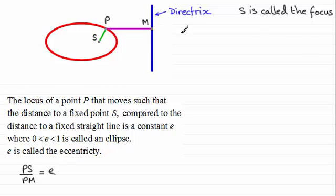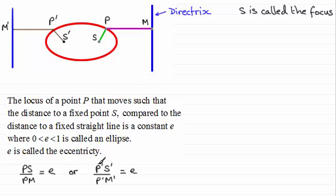Now it's also possible to trace out the same ellipse if the focus and the directrix are placed in this position here where it's symmetrical about a vertical line through the center. In which case we've got the ratio that P dash S dash compared with P dash M dash equals the same constant E.